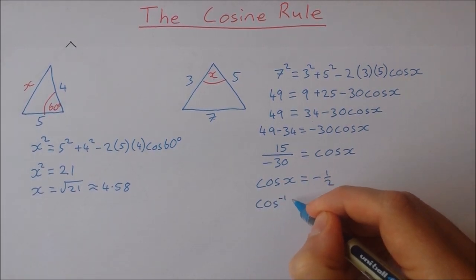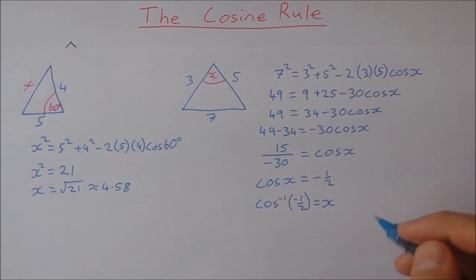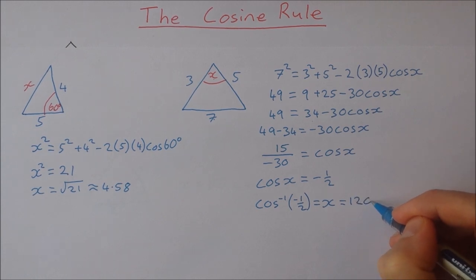So cos inverse of minus a half is going to give me the angle x. And that works out if you use your calculator to be 120 degrees.